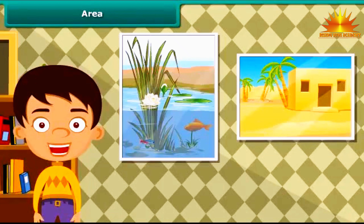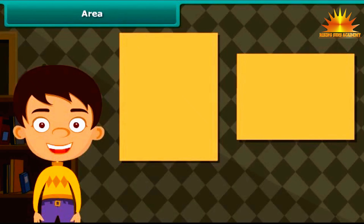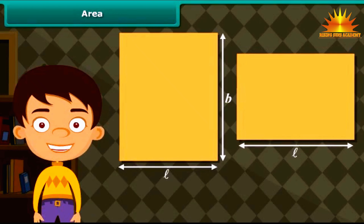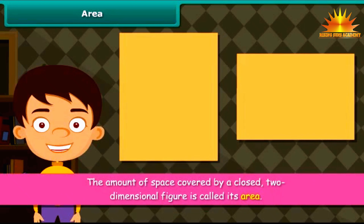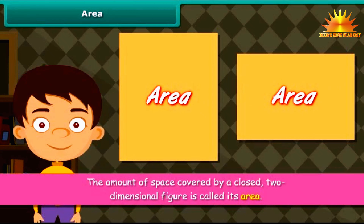Take two paintings of different sizes and compare them. The amount of space covered by the two paintings will be different. This is because the lengths and breadths of the two paintings are different. The amount of space covered by a closed two-dimensional figure is called its area. The area of one such figure can be different from the area of another such figure.